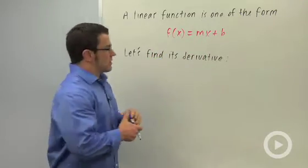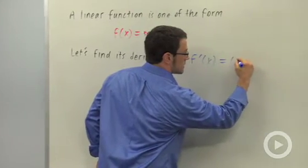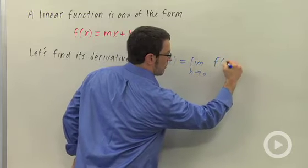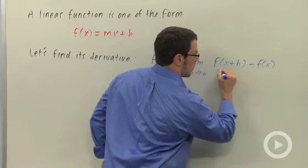Now, the derivative is going to start with the definition of the derivative. So f prime of x equals the limit as h approaches 0 of f of x plus h minus f of x over h.